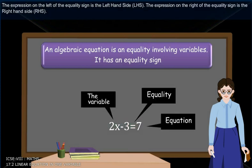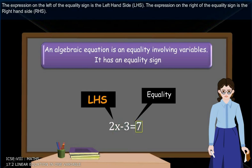The expression on the left of the equality sign is the left-hand side (LHS). The expression on the right of the equality sign is the right-hand side (RHS).